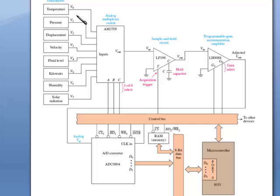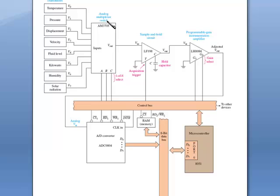So in the top part of the diagram, we have all the analog transducers that are feeding into a multiplexer switch, and then a sample and hold circuit, a programmable gain instrumentation amp, and then that's fed into the microprocessor system, which has an A to D converter connected to a data bus, which is connected to a microcontroller.